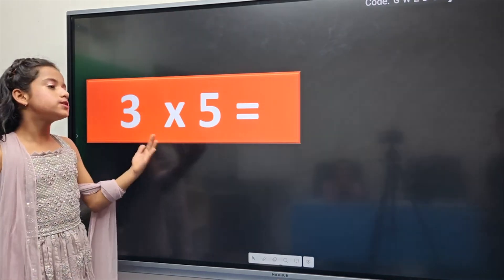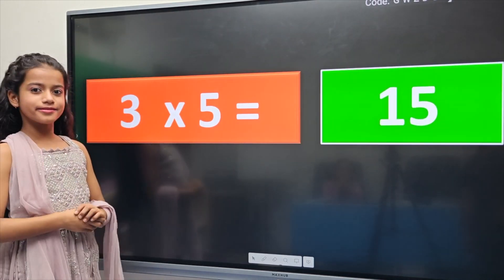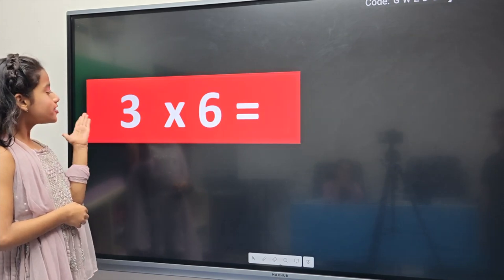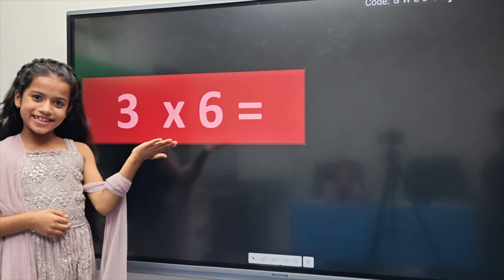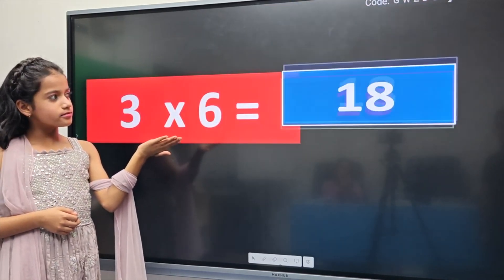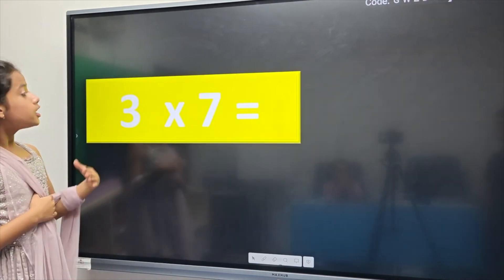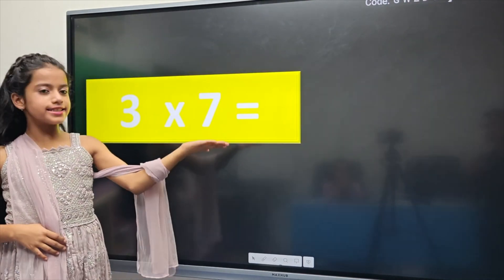Three fives are fifteen. Three fives are fifteen. Next. Three sixes are eighteen. Three sixes are eighteen. Next. Three sevens are twenty-one.